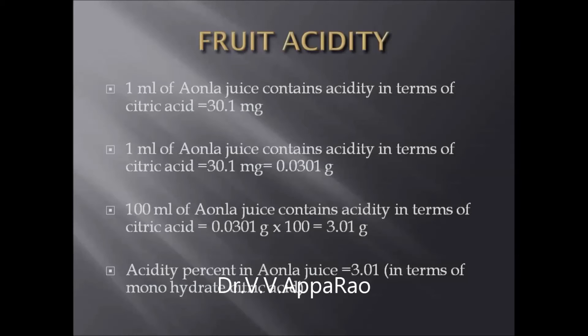Now, for each ml of amla juice, we calculated acidity. One ml of amla juice contains acidity in terms of citric acid equal to 30.1 mg. Therefore, one ml of amla juice contains acidity in terms of citric acid, expressed in grams, divided by 1000. Therefore, that value is equal to 0.0301 g.